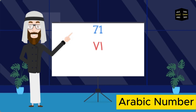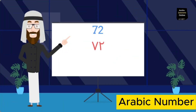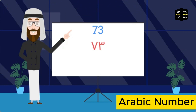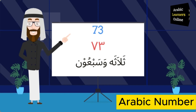Seventy-one: واحد وسبعون (waahid wa-sab'oon). Seventy-two: اثنان وسبعون (ithnaaan wa-sab'oon). Seventy-three: ثلاثة وسبعون (thalaatha wa-sab'oon).